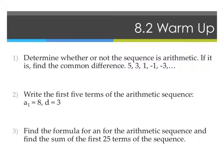Number one says to determine whether or not the sequence is arithmetic, and if it is, find the common difference. So from 5 to 3 to 1 to negative 1 to negative 3, is there the same change by adding or subtracting a number? Yes. What is that number? Negative 2. So this would be yes, this is an arithmetic sequence, and D, which is your common difference, is negative 2.